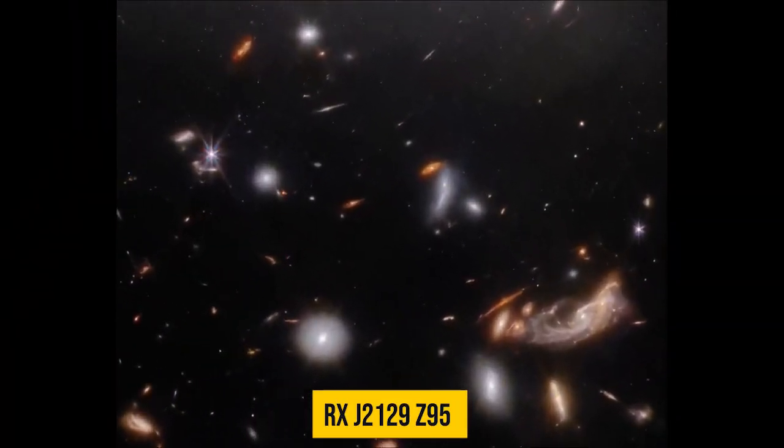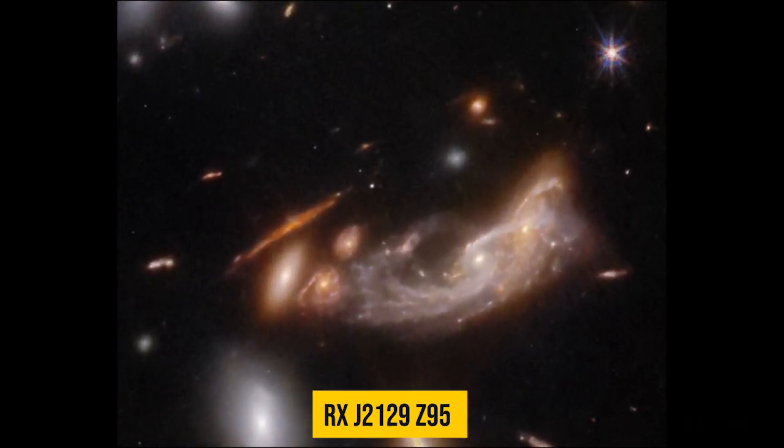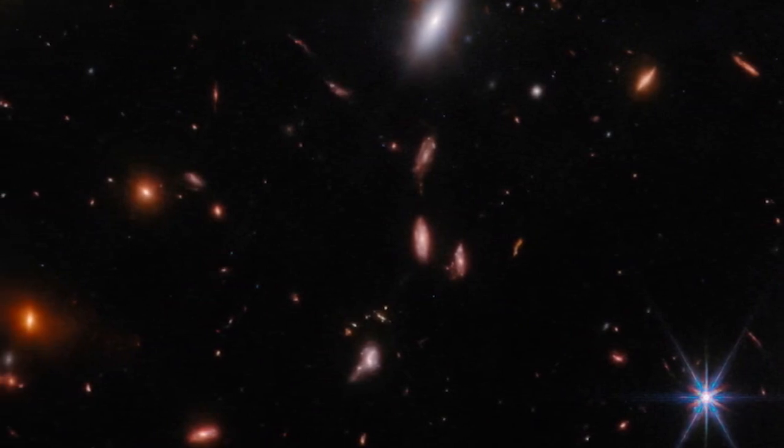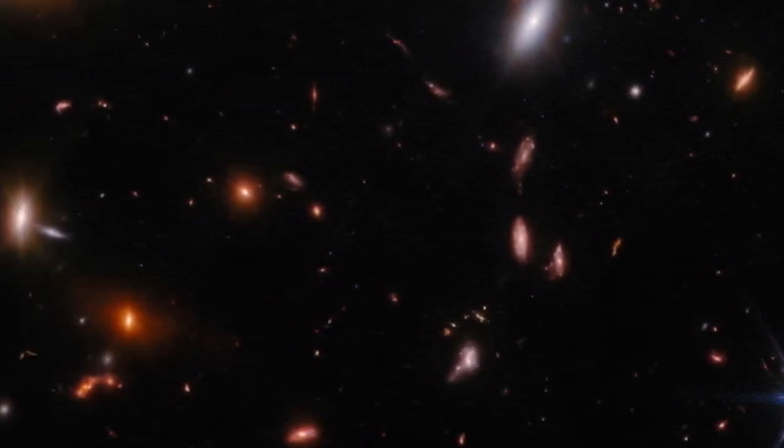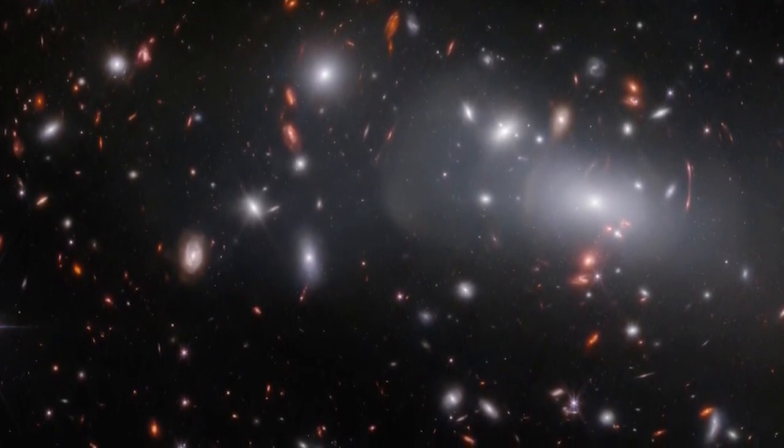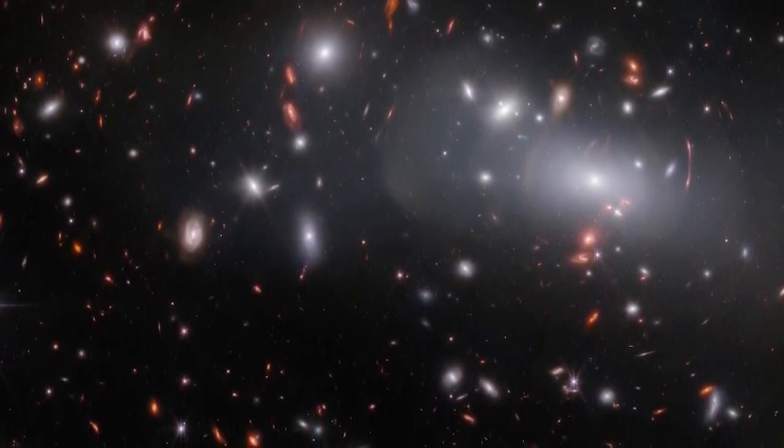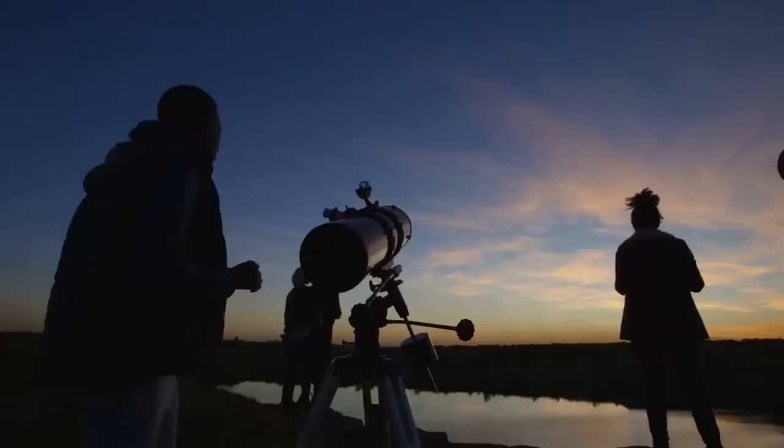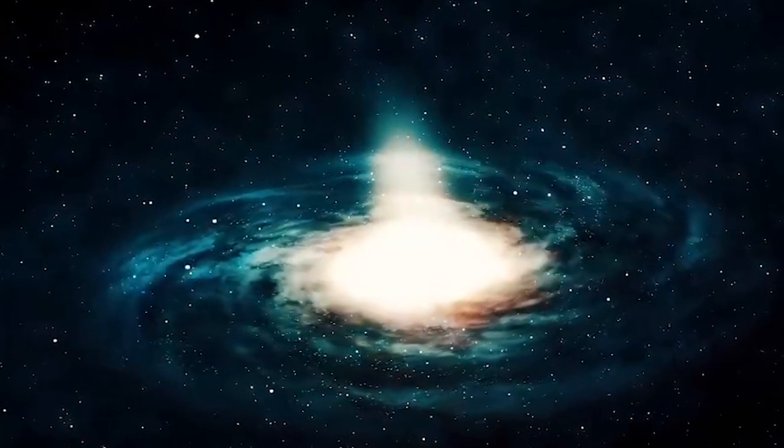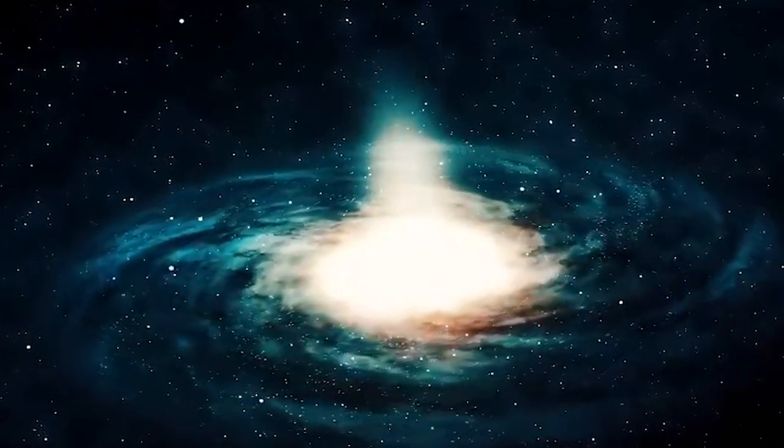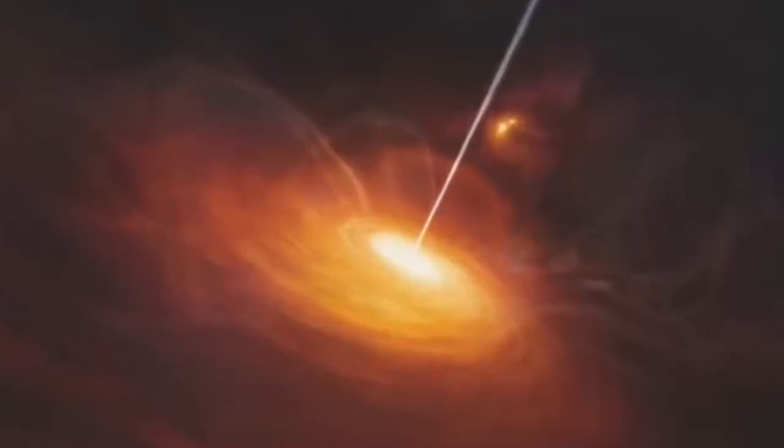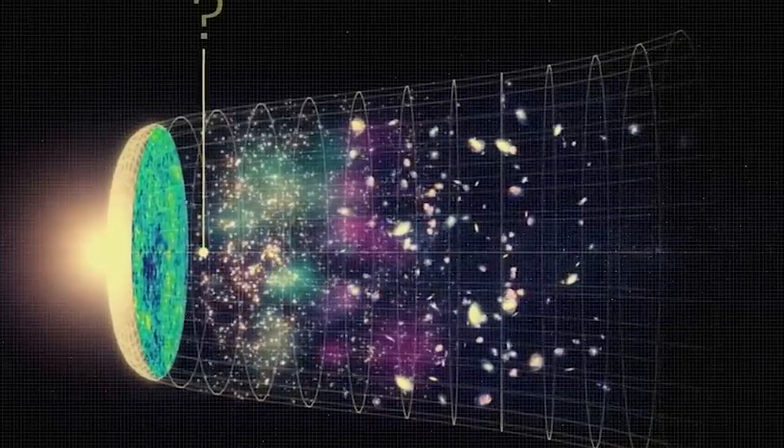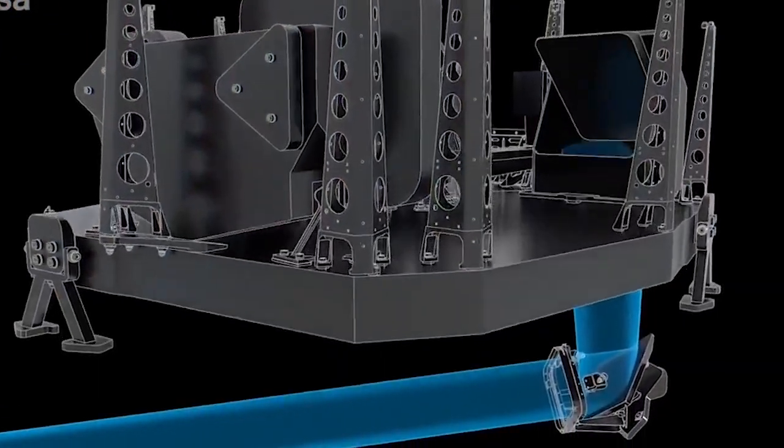The discovery of Rx J2129-Z95, a galaxy dating back to half a billion years after the Big Bang, provides crucial insights into the formation and evolution of galaxies during the crucial period of cosmic re-ionization. By studying the properties of this early galaxy, scientists can gain a deeper understanding of the interplay between the first luminous sources, the re-ionization process, and the subsequent evolution of galaxies and cosmic structures. This knowledge is fundamental for constructing a coherent narrative of the universe's development.